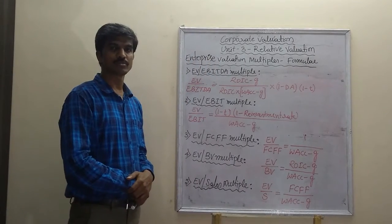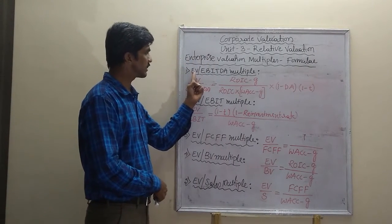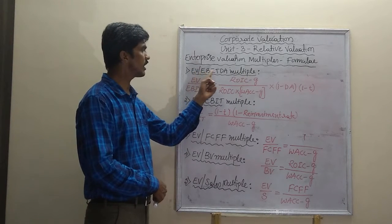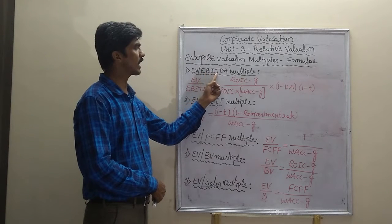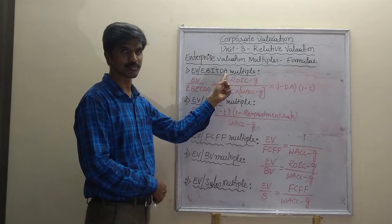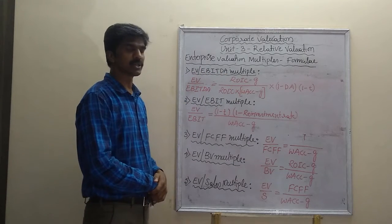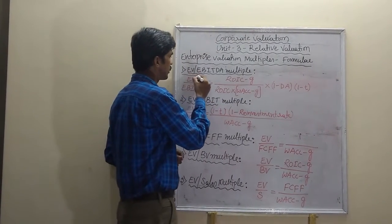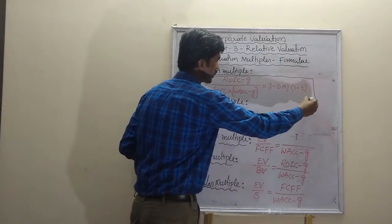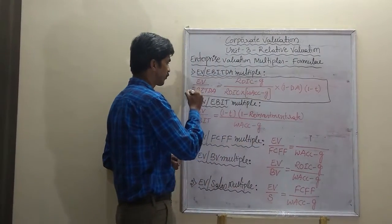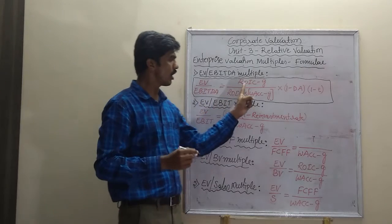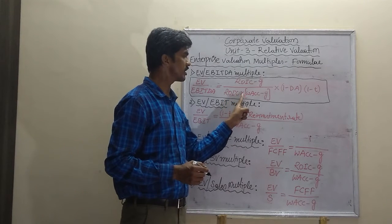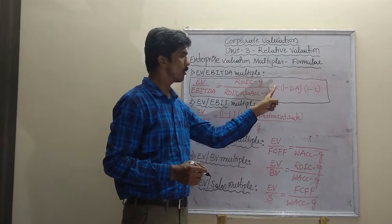Under enterprise valuation multiples, the first type is EV to EBITDA multiple, wherein EV stands for enterprise value and EBITDA stands for earnings before interest, tax, depreciation and amortization. To calculate this multiple, we use the following formula: EV to EBITDA is equal to (ROIC minus G) divided by (ROIC into WACC minus G) multiplied by